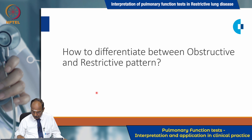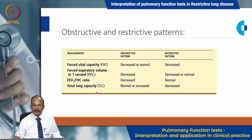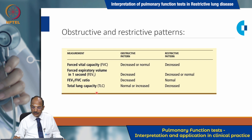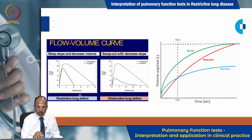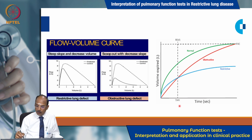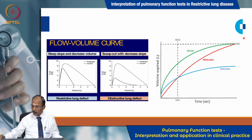How to differentiate between obstructive and restrictive patterns? Forced vital capacity is decreased or normal in obstructive pattern, whereas it is decreased in restrictive. FEV1 is always decreased in obstructive pattern and decreased or normal in restrictive. The most important factor is the FEV1/FVC ratio, which is decreased in obstructive and normal in restrictive. Total lung capacity is normal or increased in obstructive, whereas in restrictive it is decreased. In the flow-volume loop, restrictive lung function shows a steep slope and decreased volume, while obstructive shows a scooped-out appearance with a concavity. The time-volume curve parallels the normal tracing with lesser amplitude in restrictive, whereas in obstructive it is prolonged because it takes longer to expel air.